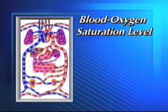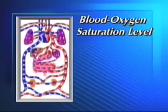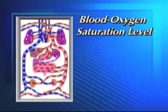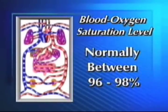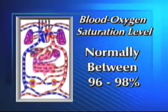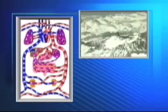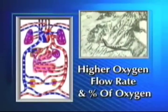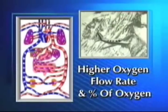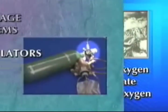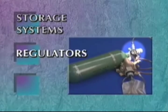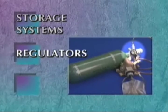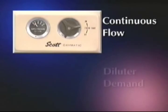The body's blood oxygen saturation level — the capacity of the blood to transport oxygen — is normally between 96 and 98 percent. To maintain this level as you ascend to altitude, your body must receive a correspondingly higher oxygen flow rate and percentage of oxygen. Regulators help in determining the proper oxygen flow, and most types fall into one of two categories: continuous flow or diluter demand.